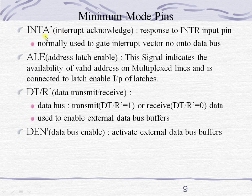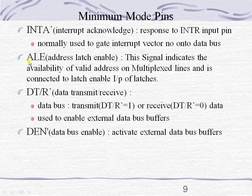INTA bar is the interrupt acknowledgement signal. When an interrupt is generated through the INTR pin and the processor recognizes it, the processor sends acknowledgement with the help of this pin. As it is an active low pin, it sends logic 0 to the interrupted device. ALE pin is used for differentiating address from data on the multiplexed lines — if this pin is 1, the multiplexed lines are carrying address information; if 0, they are carrying data information.